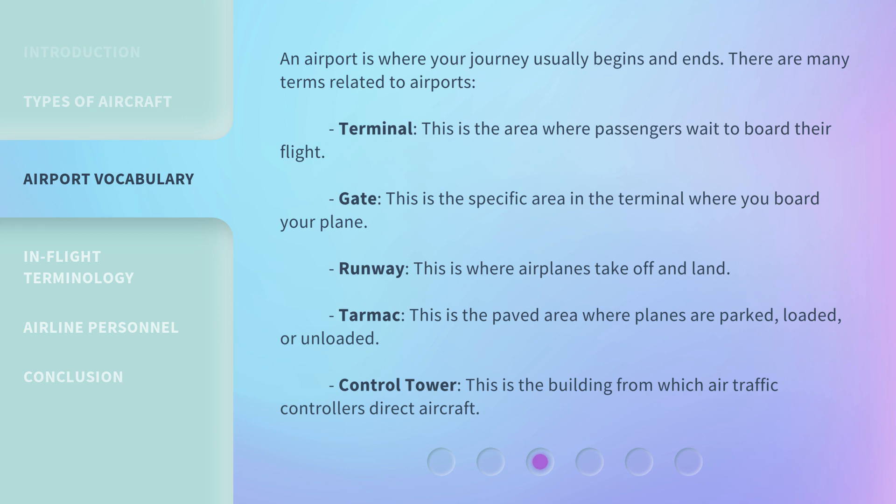Runway: this is where airplanes take off and land. Tarmac: this is the paved area where planes are parked, loaded, or unloaded. Control tower: this is the building from which air traffic controllers direct aircraft.